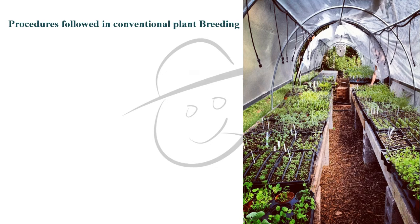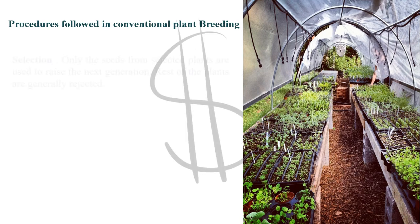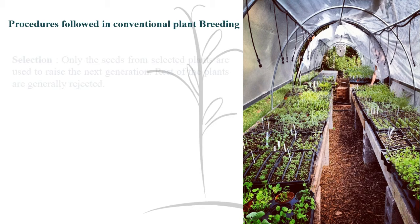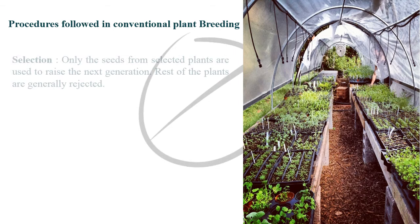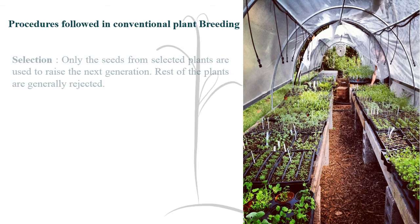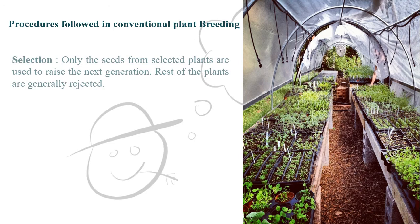Procedures followed in conventional plant breeding. The first one is Selection. Only the seeds from selected plants are used to raise the next generation. The rest of the plants are generally rejected.